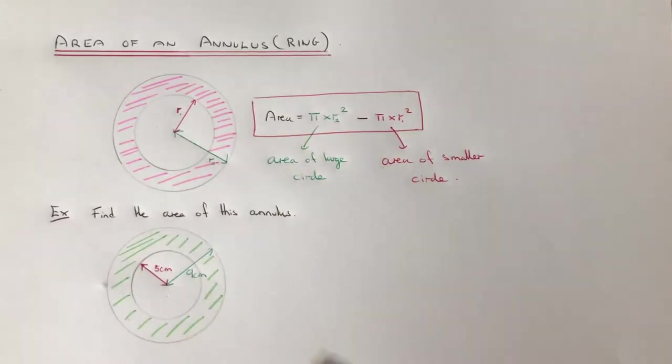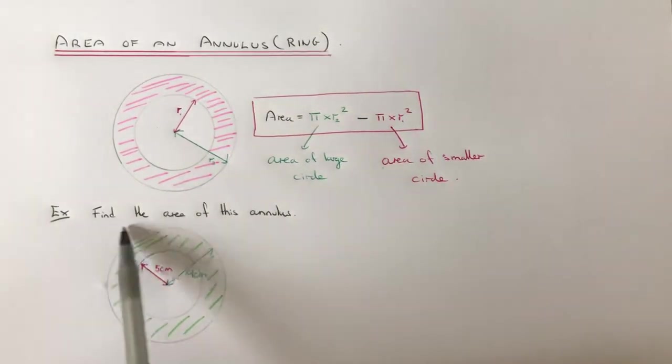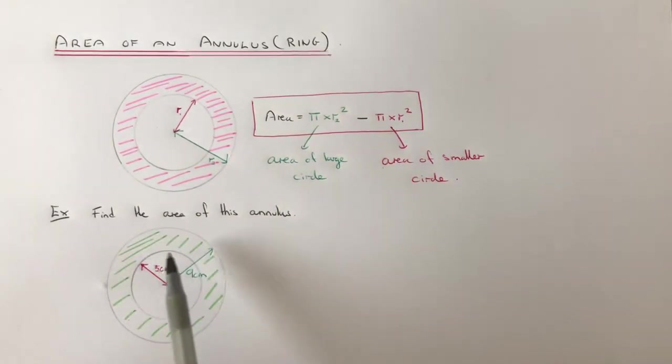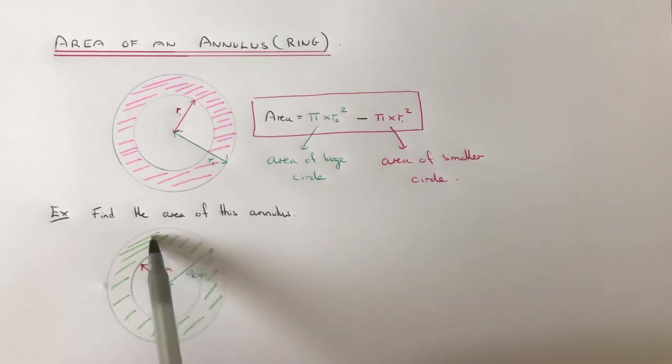So let's have a look at an example. We've got to work out the area of this annulus, so that's the area shown in green. You can see it's made up of a smaller circle and a larger circle.